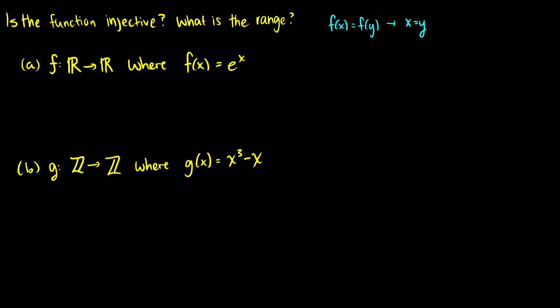So first we assume that f(x) is equal to f(y), so that's the same thing as saying that e to the x is equal to e to the y. Now we can take the natural log of both sides, and we know that the natural log and the exponential cancel, so we're left with x is equal to y.